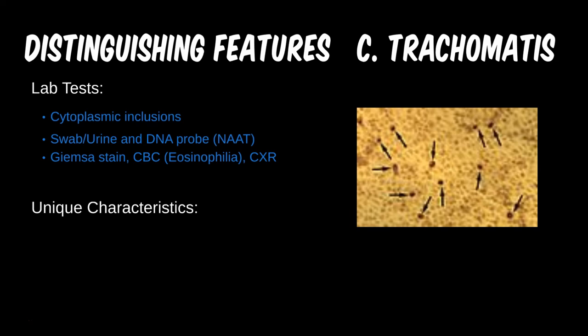Eosinophilia can be seen on blood counts in Chlamydia infections, usually more associated with respiratory disease. A chest X-ray is also useful for any respiratory infection. Chlamydia is unique in that it is one of the few bacteria — and the only one we cover — that lacks muramic acid in its cell wall; this is thought to be why it's resistant to beta-lactams. This genus also lacks the ability to produce its own ATP, labeling it an energy parasite.